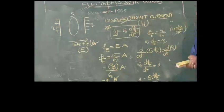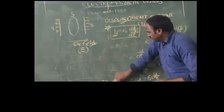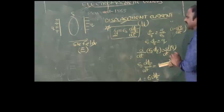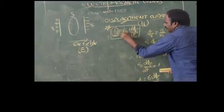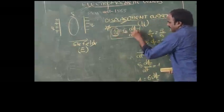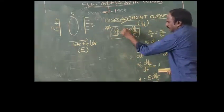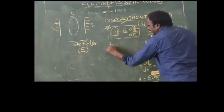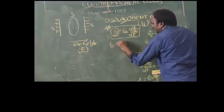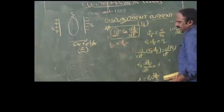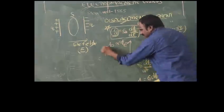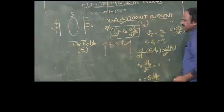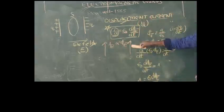From this equation, displacement current depends on the permittivity of free space and the electric flux. Since ε₀ is a constant, displacement current always depends on the electric flux. If we increase the electric flux, displacement current also increases.